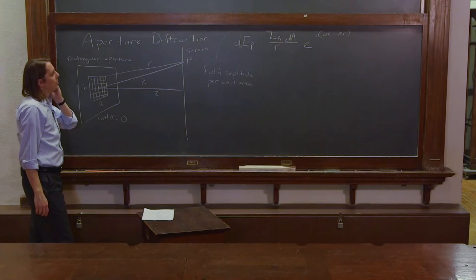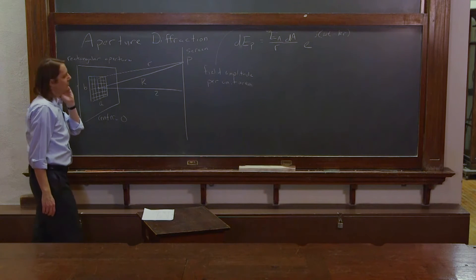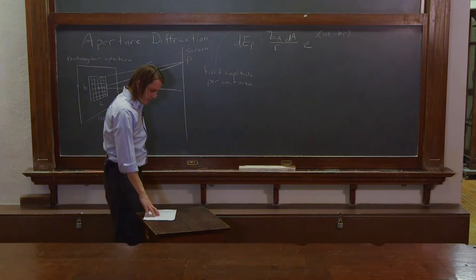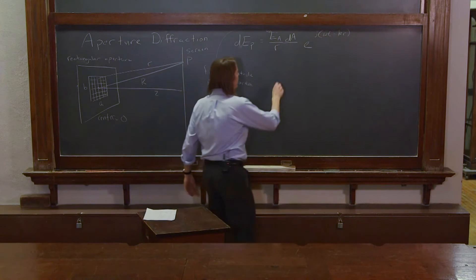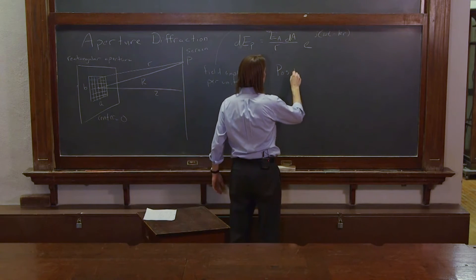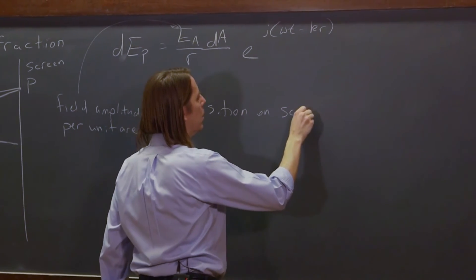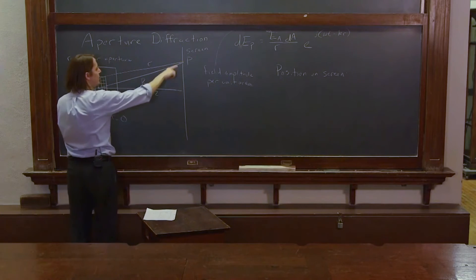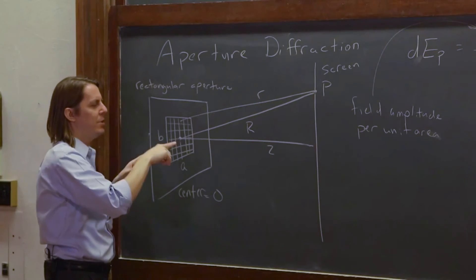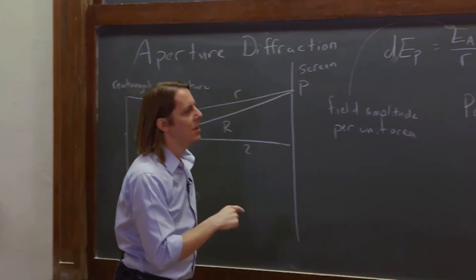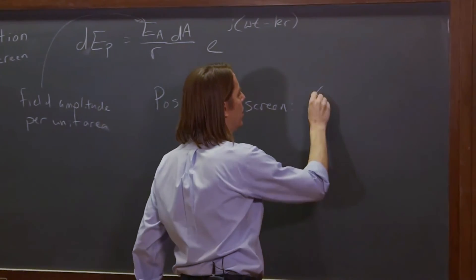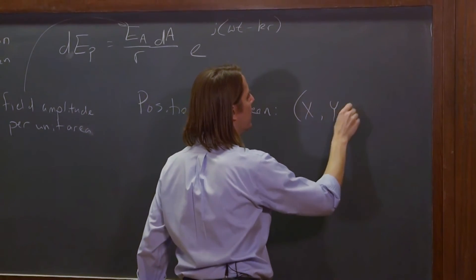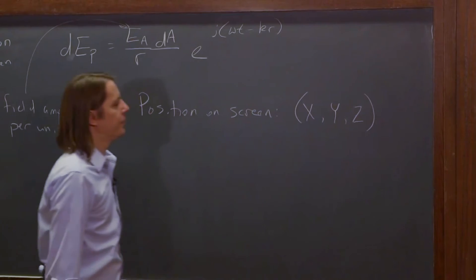So now to work with this, we have to think about two things. One is the position on the screen. So if this is the origin, the position of P, we're going to use big X, big Y, and big Z to be the position on the screen. X, big Y, big Z.